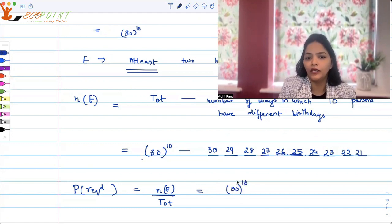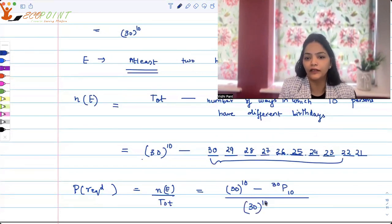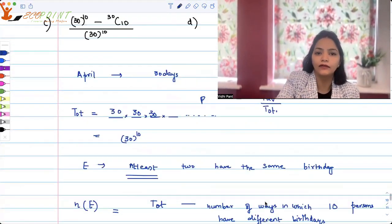So the favorable cases are 30 to the power 10. And what can you call this scenario? This scenario is basically you're permuting 10 people out of 30 people. So it is 30P10 upon 30 to the power 10. Let's see if we have this option.